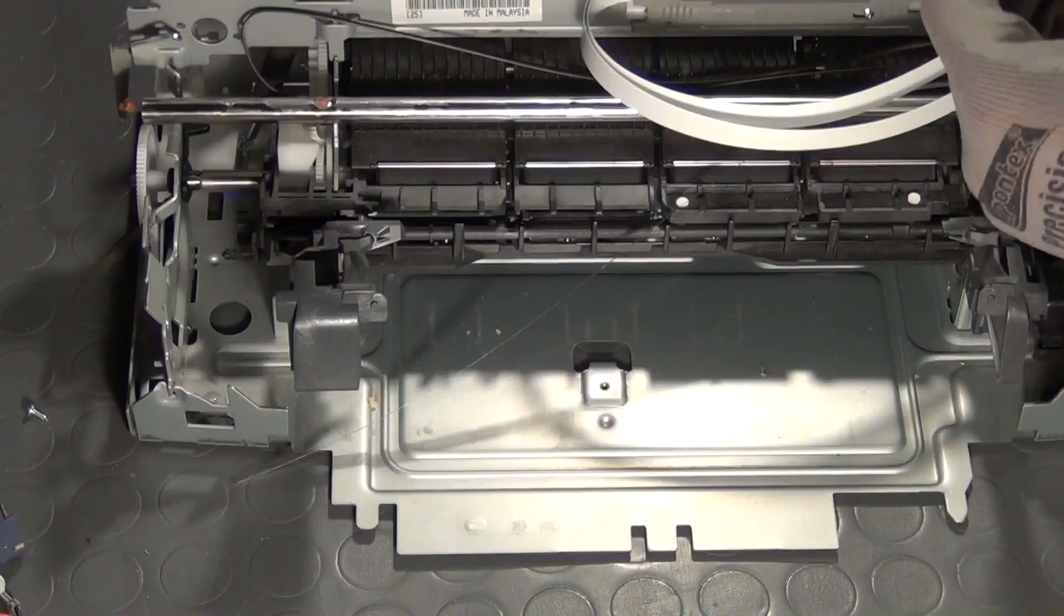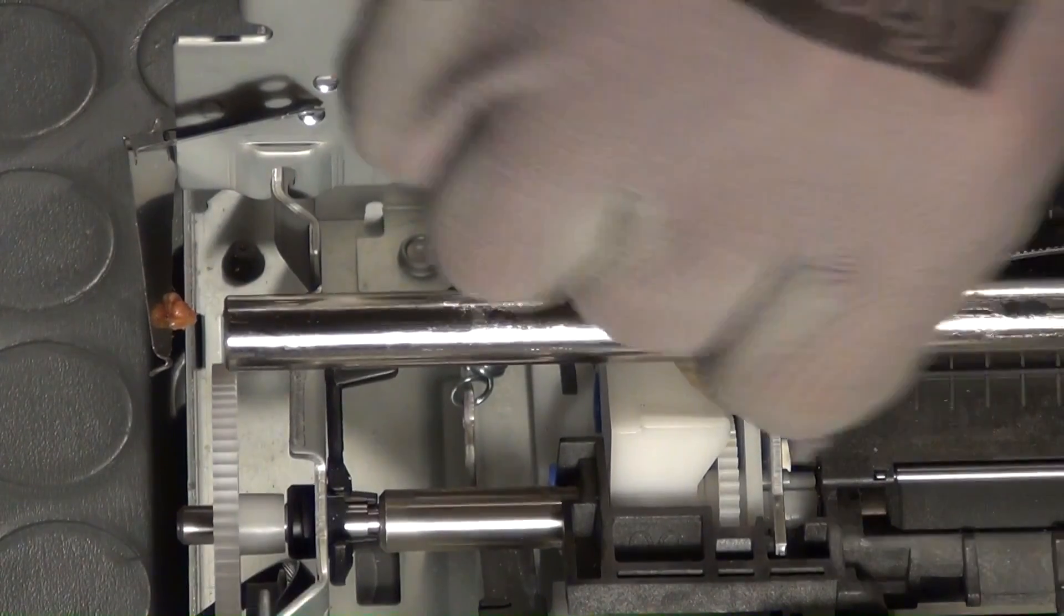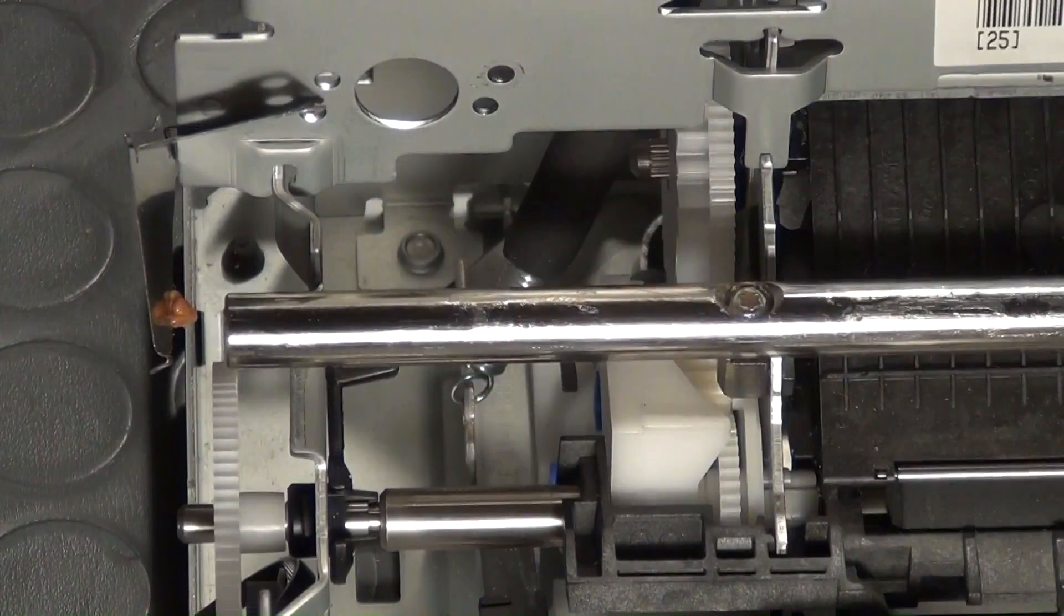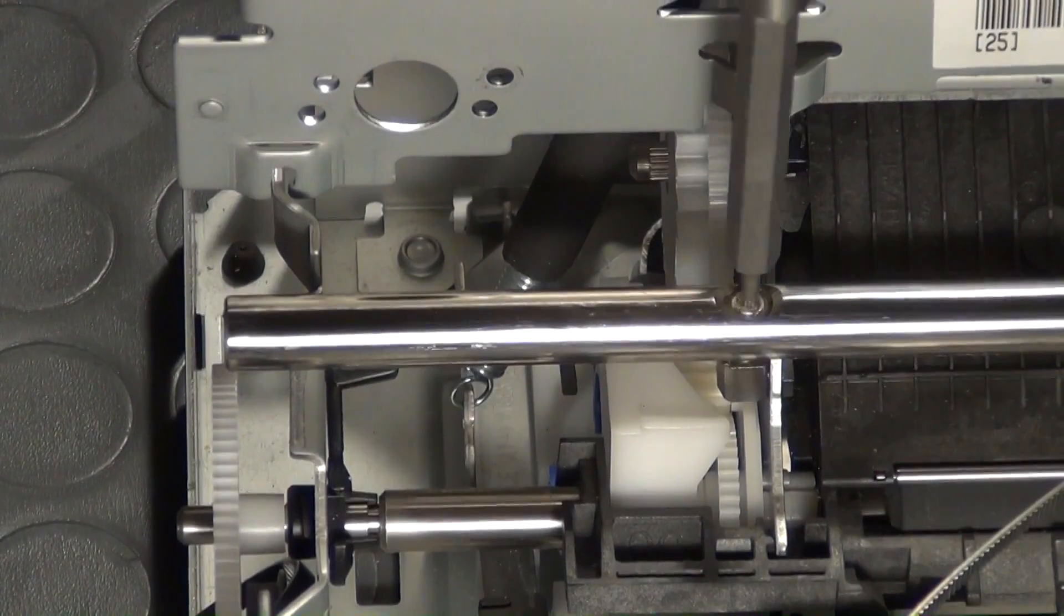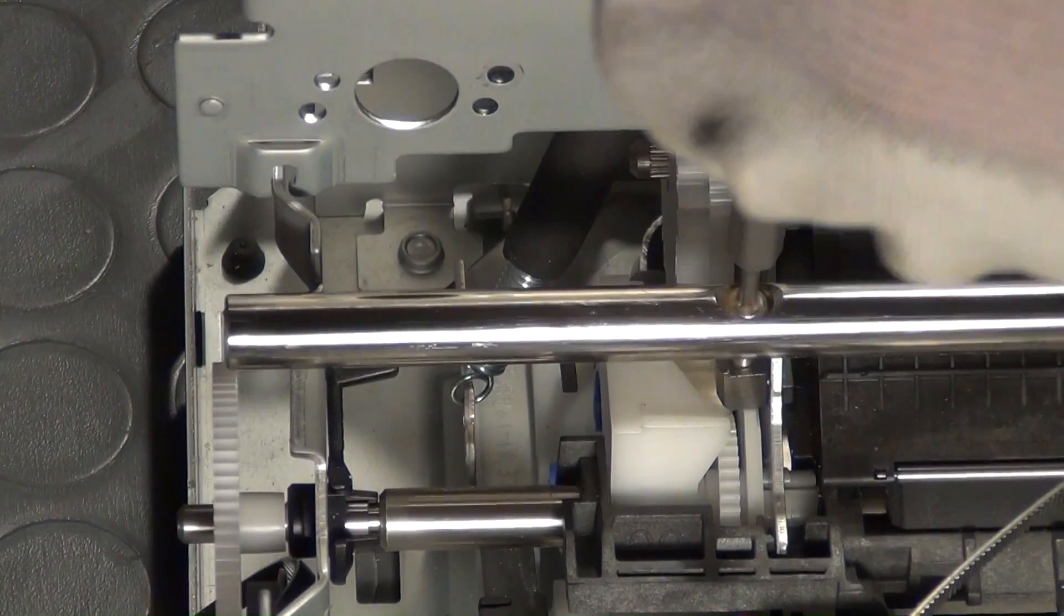With the motor gone, I will now demount the big shiny steel bar, which serves as a rail for the printer heads to slide on. First, some lubricant is wiped off. Then, two or three screws at the two ends of the bar must be removed.